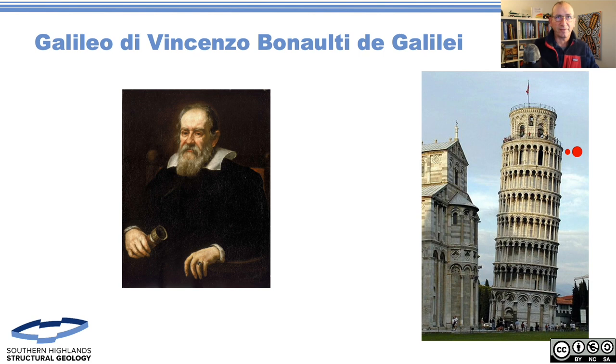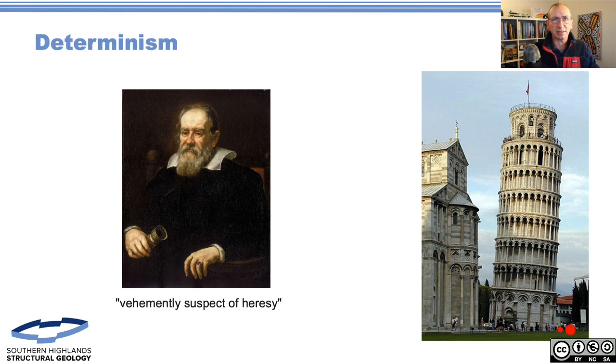Galileo, one of the forefathers of science, thought about things a lot and broke a bunch of ideas - one particular was whether the earth went around the sun or vice versa. He thought about forces and looked at how gravity worked. One great experiment was taking two objects of different masses and dropping them from the Leaning Tower of Pisa. He noticed they both land at the ground at the same time irrespective of their mass.